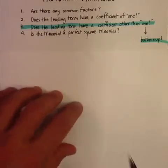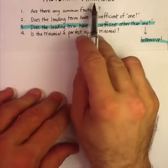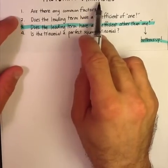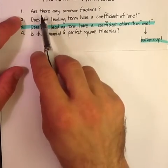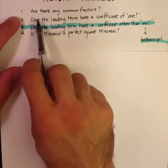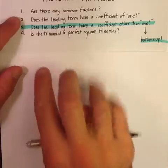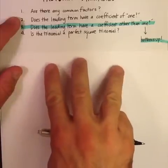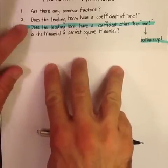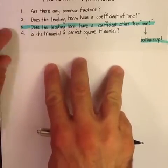Let me briefly review what you do when you look at trinomials. You always ask yourself the question: are there any common factors to each of the three terms? And if there is, you factor it out.